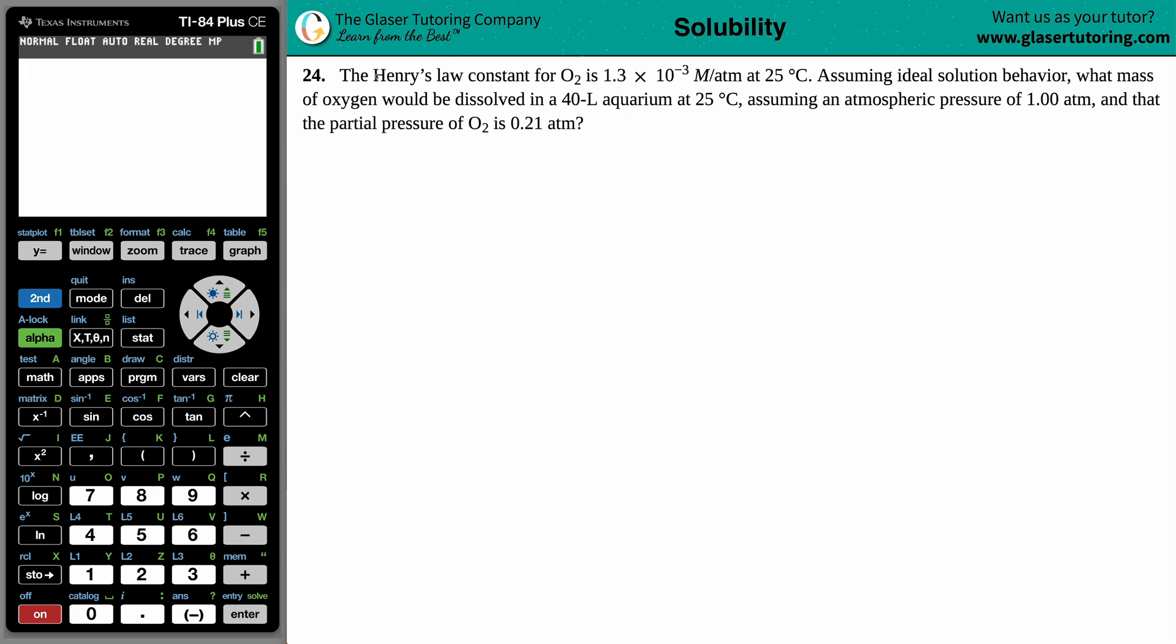Number 24. The Henry's Law constant for O2 is 1.3 times 10 to the negative third molarity per ATM at 25 degrees Celsius. Assuming ideal solution behavior, what mass of oxygen would be dissolved in a 40 liter aquarium at 25 degrees Celsius, assuming an atmospheric pressure of 1.00 ATM and that the partial pressure of O2 is 0.21 ATM.